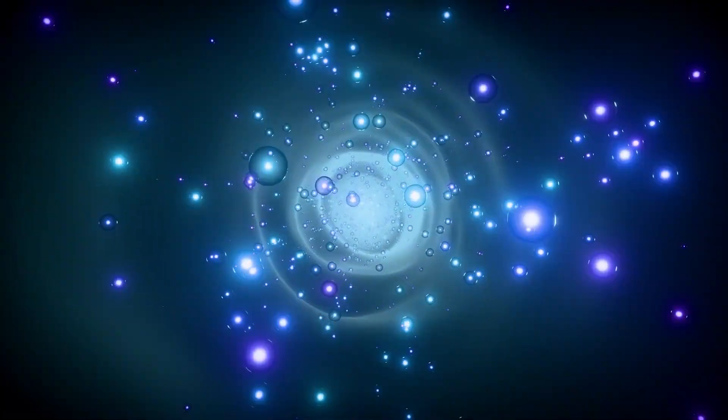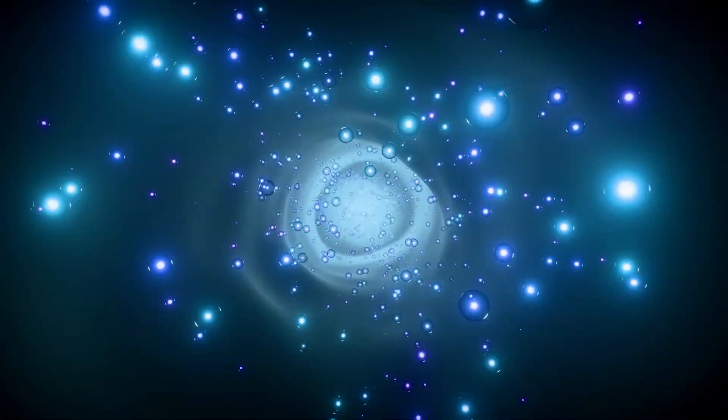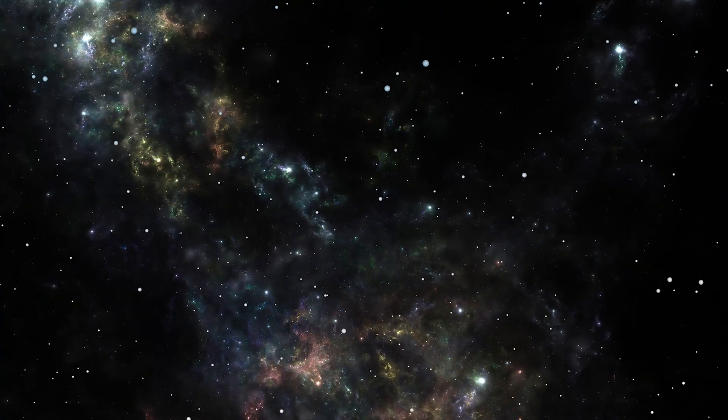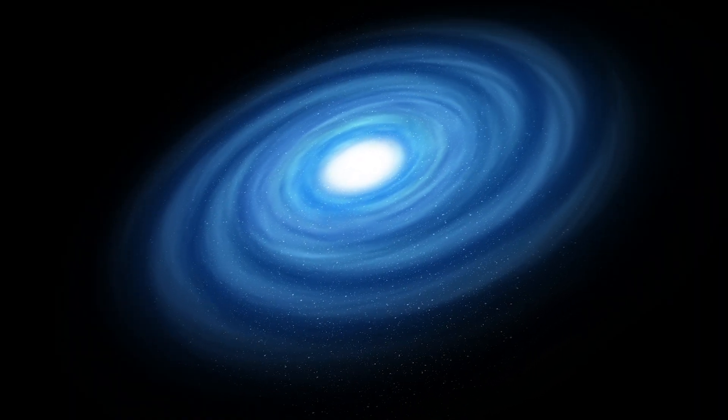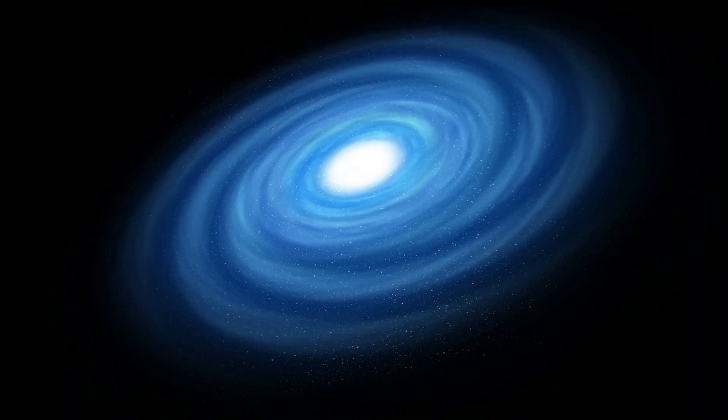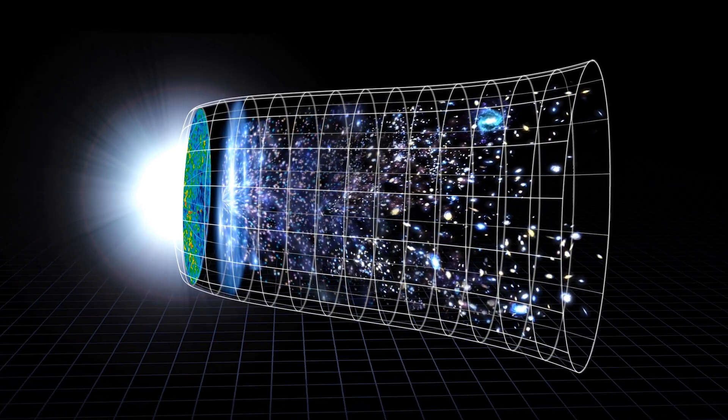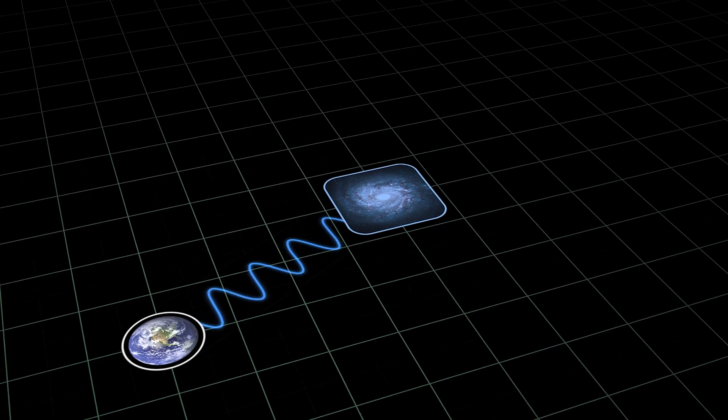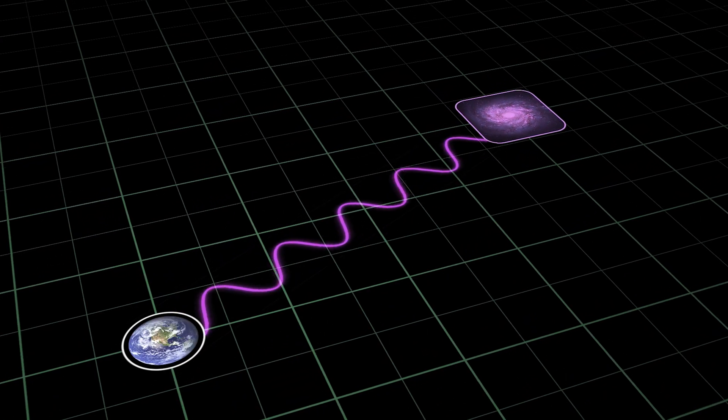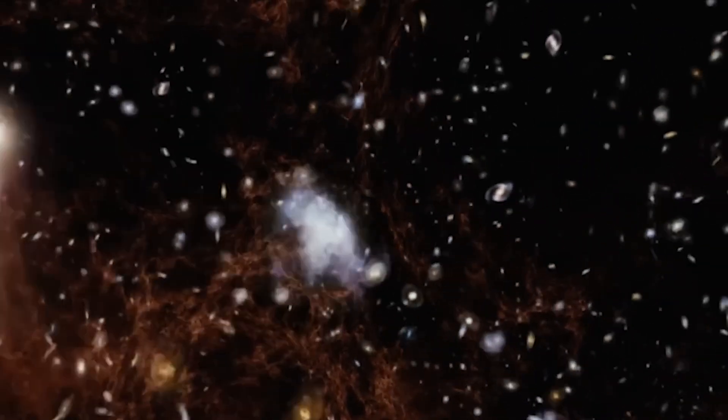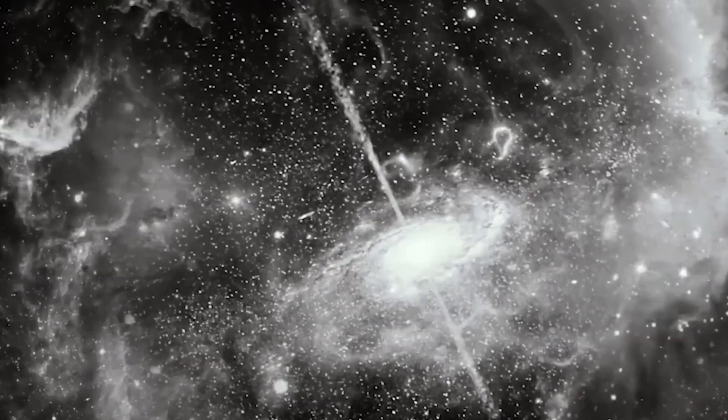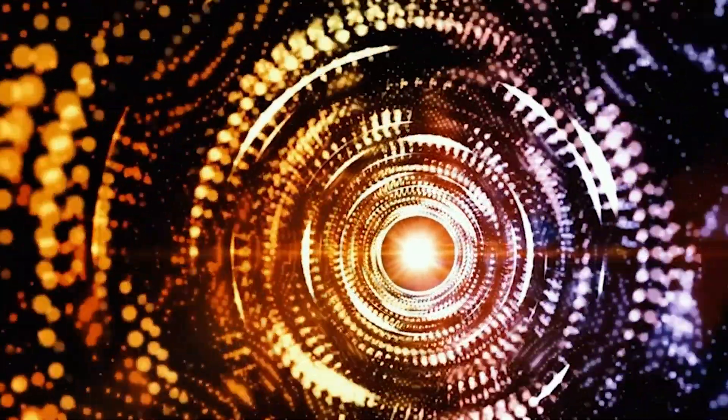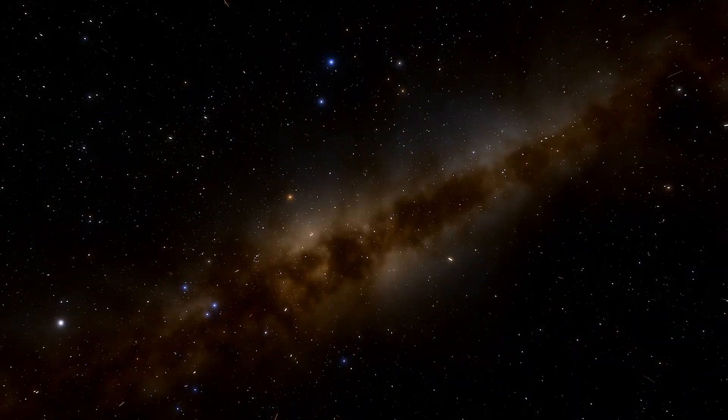On the theoretical front, scientists now have to poke and prod this model from every angle. One major question: can a Finslerian universe build stuff? It's one thing to explain accelerated expansion; it's another to explain how that expansion still allowed galaxies, clusters, and the giant cosmic web to form, instead of everything yeeting apart into a lonely, featureless void. If geometry alone can grow the universe's grand structures and outperform or match Lambda-CDM's predictions, that would be huge.